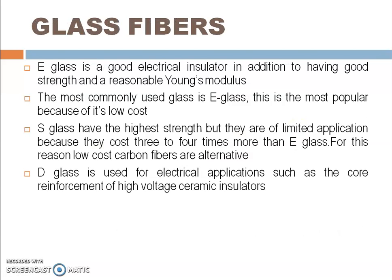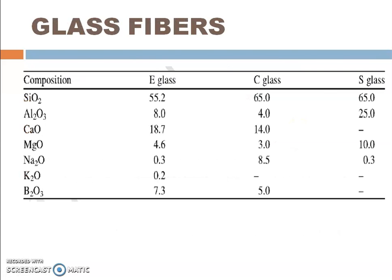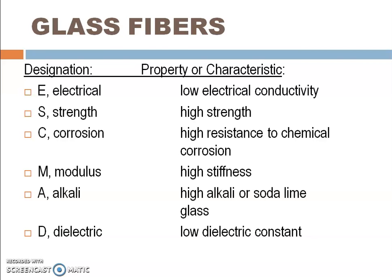In summary, glass fibers are the most important type of fiber reinforcement and the most widely used. By varying the composition of glass fibers, we can produce different types such as E glass, S glass, and C glass, each suited for different applications.